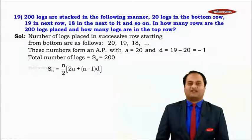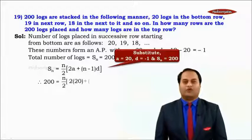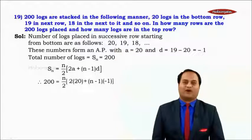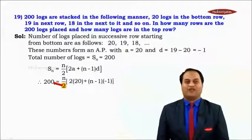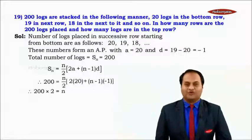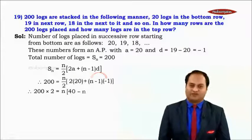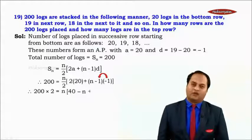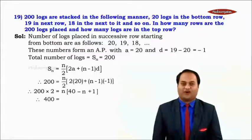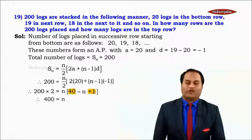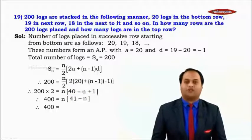Substituting: 200 = n/2 × (2×20 + (n−1)×(−1)). Moving 2 to the other side: 400 = n × (40 − n + 1), which simplifies to 400 = n × (41 − n).